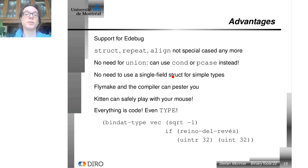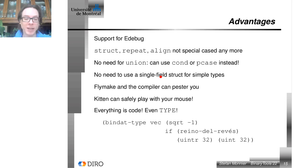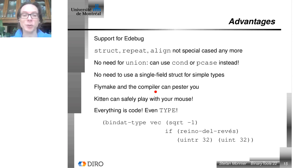The advantages are that there's support for debugging. There are no special cases distinguishing types from specs from other things. The union type has disappeared, because now we can use if or cond or any other computation to compute the type — it's unnecessary, we can use standard Emacs Lisp constructs. We don't need single-field structs just to pack or unpack a scalar. Bindat can now take a type instead of a list of fields. And since the spec is code, you can have tools like Flymake show you errors directly in the source code.